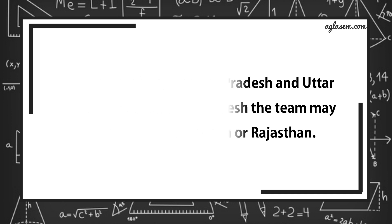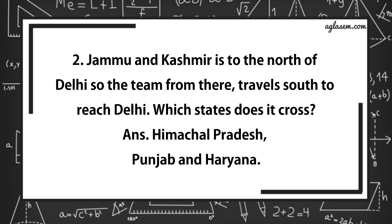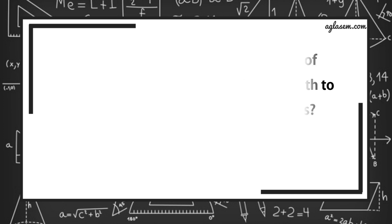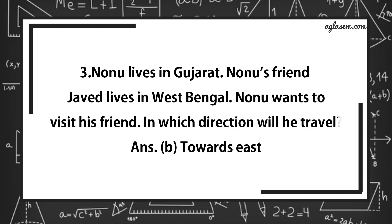Further, question number 2 says, Jammu and Kashmir is to the north of Delhi. So the team from there travels south to reach Delhi. Which state does it cross? Answer is, Himachal Pradesh, Punjab, and Haryana. Further, question number 3 says, Nonu lives in Gujarat. Nonu's friend Javed lives in West Bengal. Nonu wants to visit his friend. In which direction will he travel? Answer is, towards east.